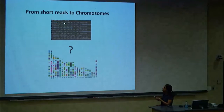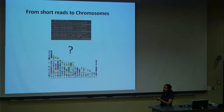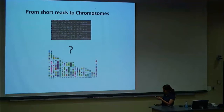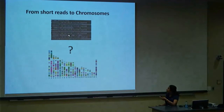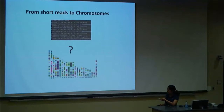Now the bigger challenge: how do you put 3 billion fragmented reads into chromosomes? These are just fragmented representations of your genome — not very useful if you're trying to understand what's happening functionally. Before I discuss how we got these sequences into a chromosome map, I'll introduce the target genome: a plant in the family Brassicaceae.